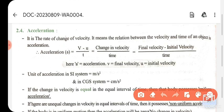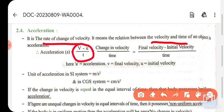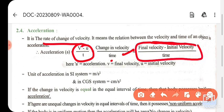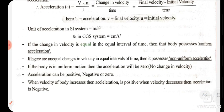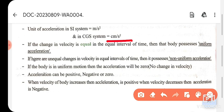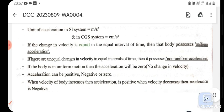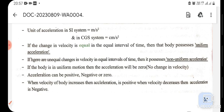Acceleration means the rate of change of velocity — velocity and time have a relation called acceleration. The formula is: a = (v − u) / t, meaning final velocity minus initial velocity divided by time taken. The SI unit of acceleration is meter per second squared, and in the CGS system it is centimeter per second squared. If velocity changes by equal amounts in equal intervals of time, we say the body has uniform acceleration.